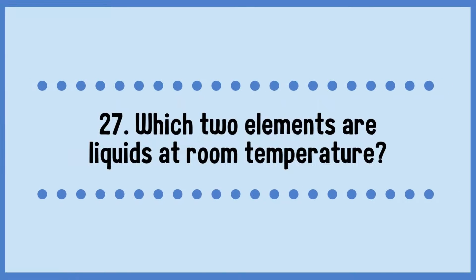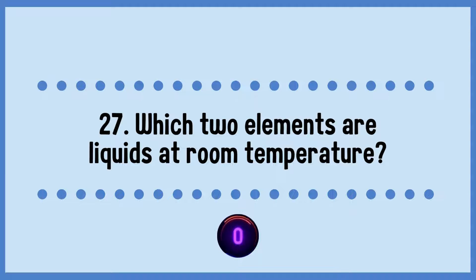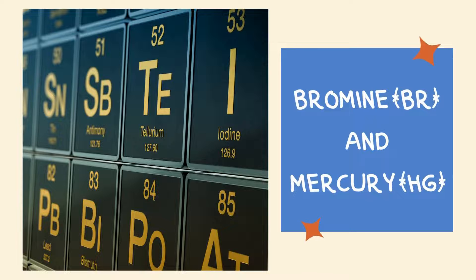Which two elements are liquids at room temperature? The answer is bromine and mercury.